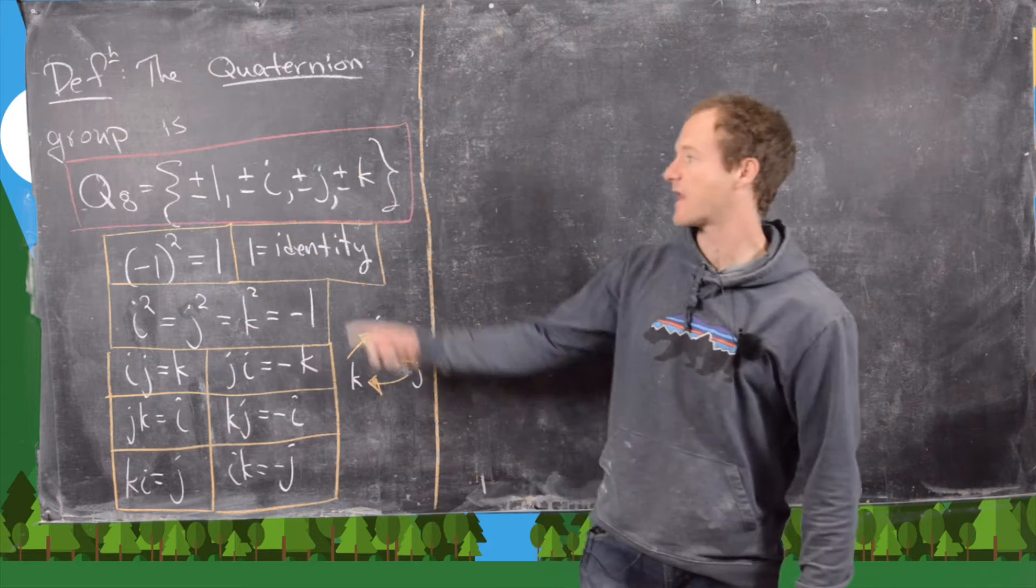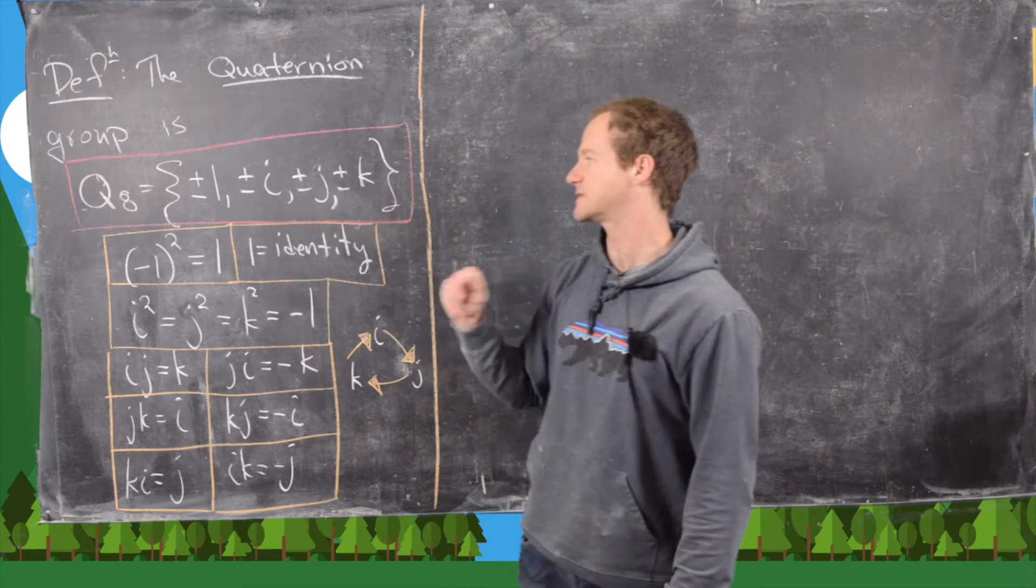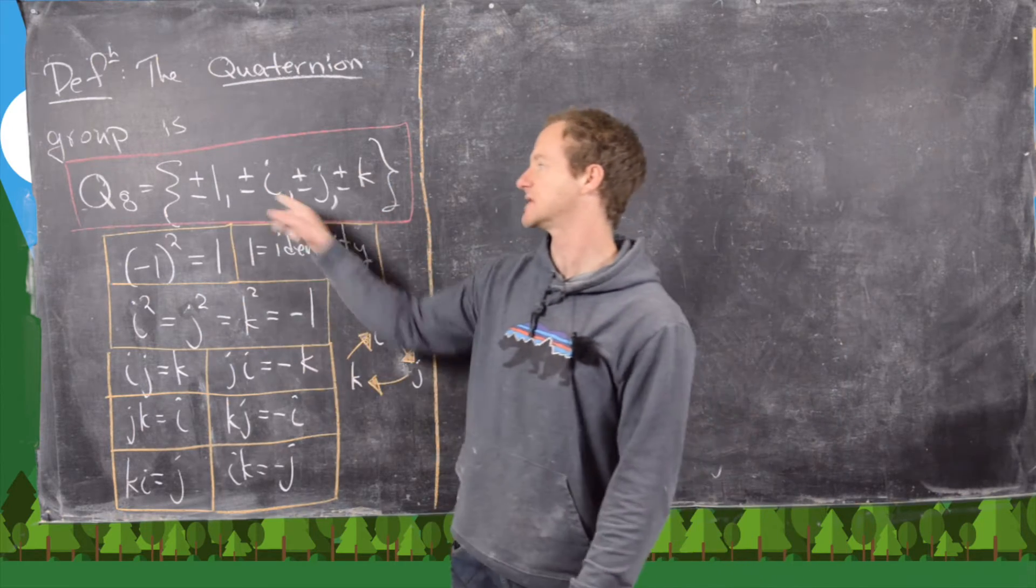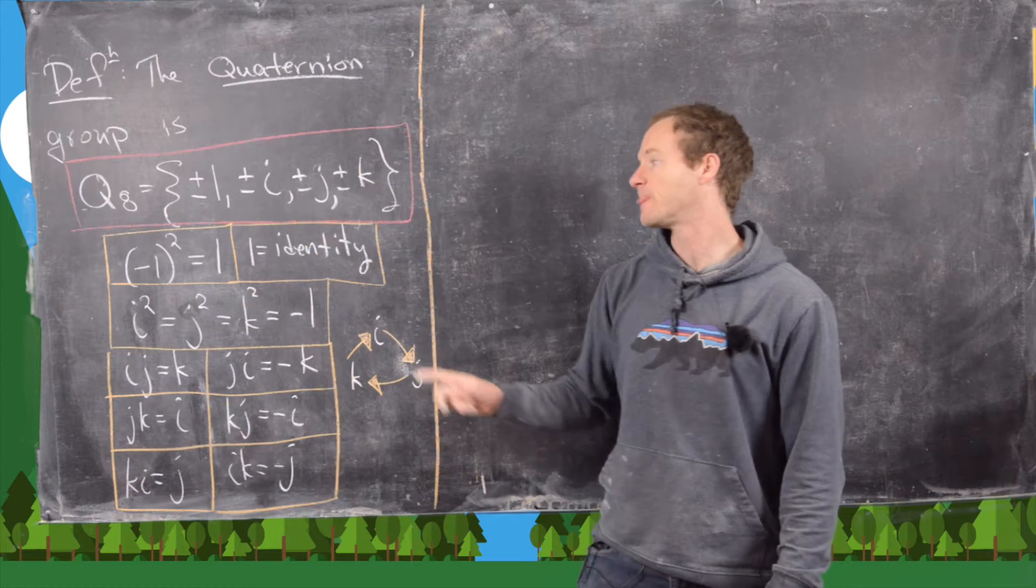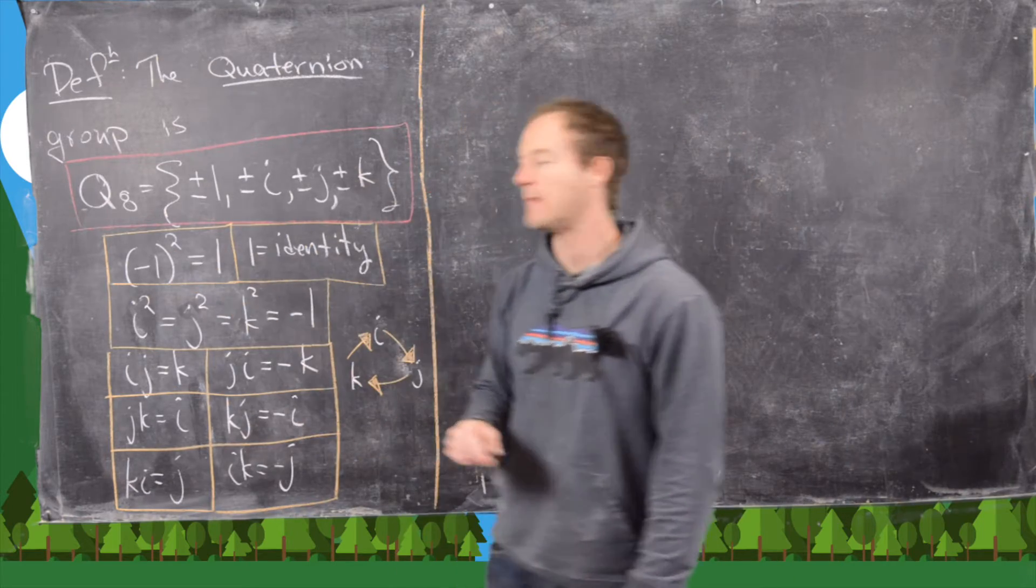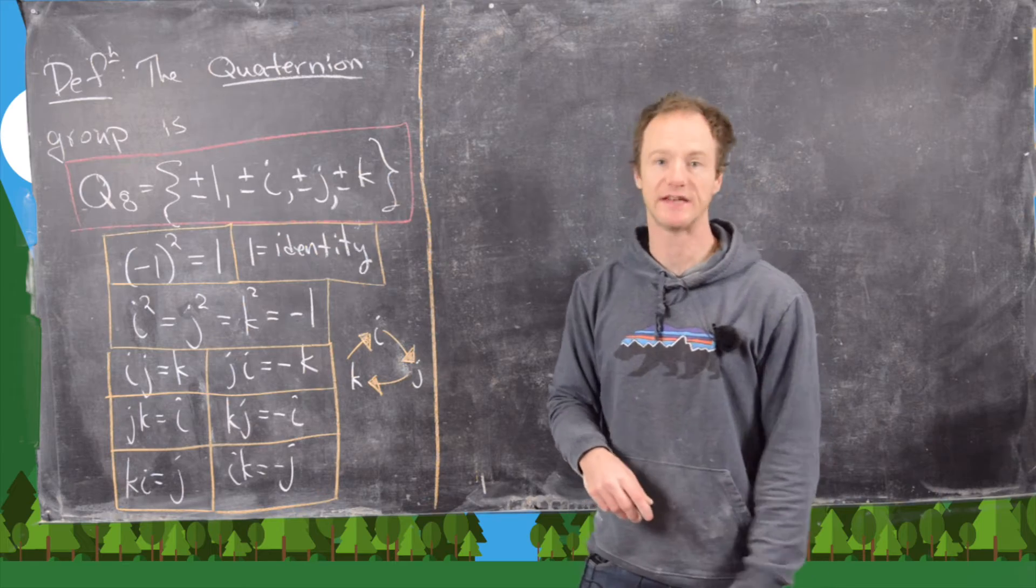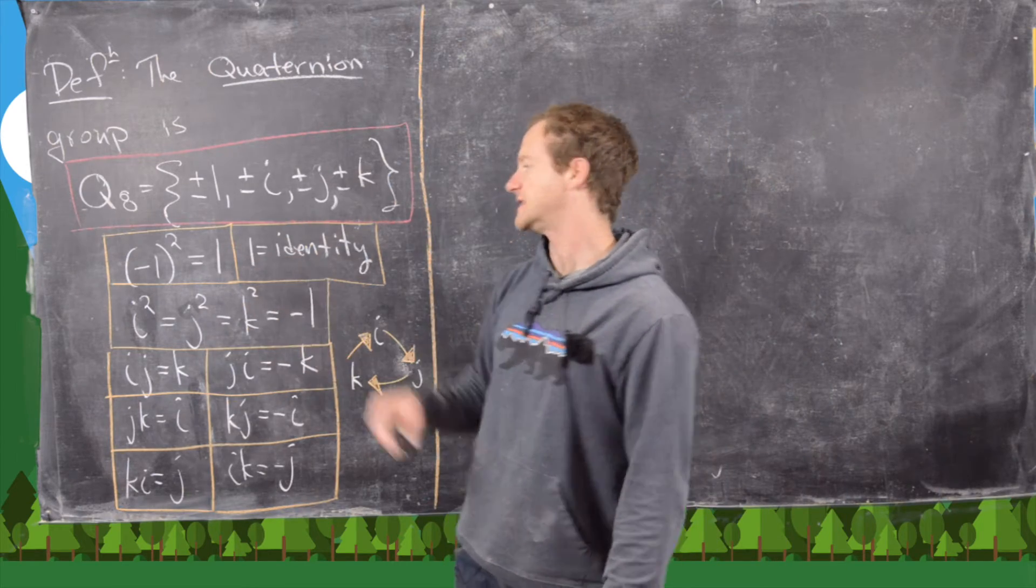So it's given by the elements plus minus 1, plus minus i, plus minus j, and plus minus k. So those are 8 total elements, plus i and minus i are different. And here we have this rule that minus 1 squared is equal to 1, so just like in integers. And then 1 is the identity.